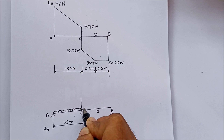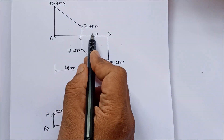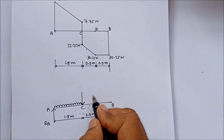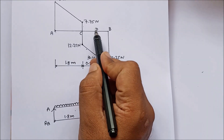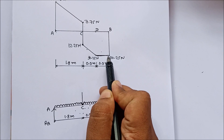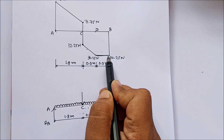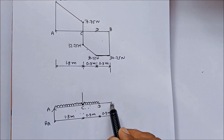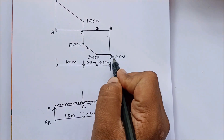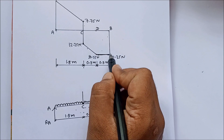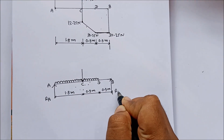At point C there is a point load. Again, between points C and D there is an inclined line, so there is a UDL between C and D. Between D and B there is a constant shear force, meaning no load acts between D and B. There is also a sudden rise in shear force from minus 30.25 N to 0, indicating a support reaction at B.